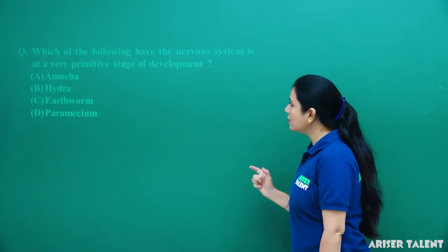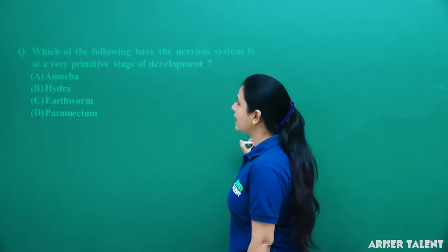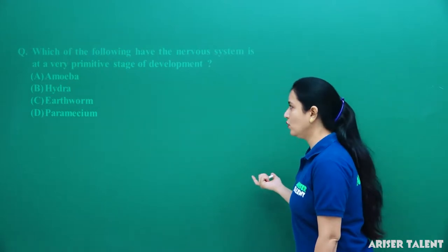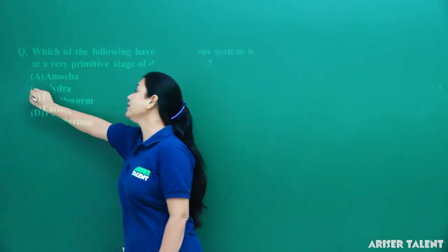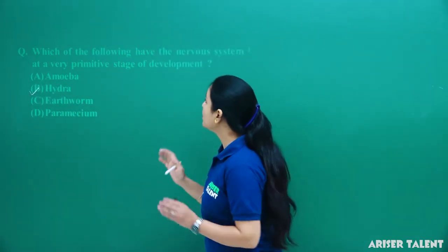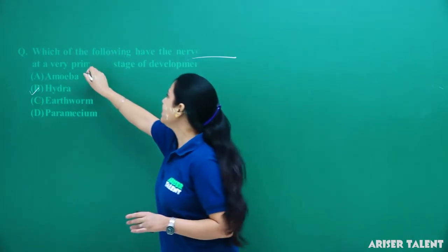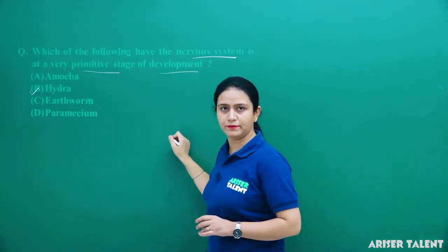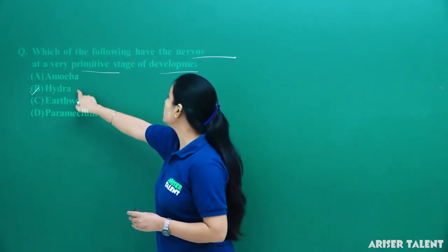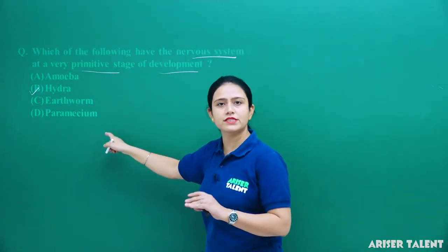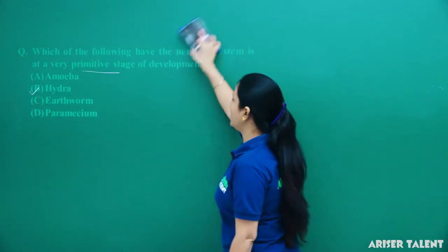Which of the following has the nervous system at a very primitive stage of development? Amoeba — no. Hydra — yes. Earthworm — no. Paramecium — no. The correct option is Hydra, because it contains a nervous system at the primitive stage of development. When Hydra starts developing, it has a nervous system at the primitive stage itself. Option B is the correct answer.